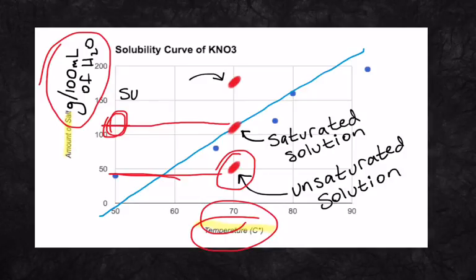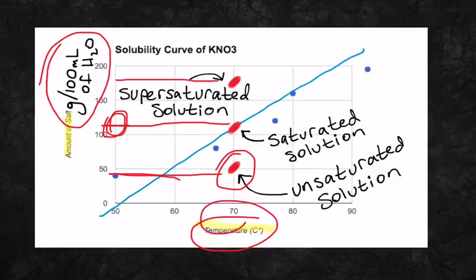If an area, if the dot appears above the line, then we're going to have a supersaturated solution. So if I had, gosh, I'm kind of interpolating and guessing here, looks like maybe around 175 grams of potassium nitrate dissolved in 100 milliliters of water at 70 degrees Celsius, I would have a supersaturated solution.